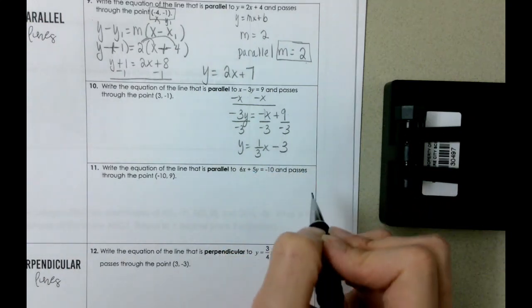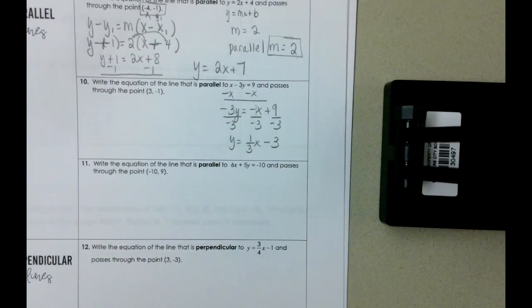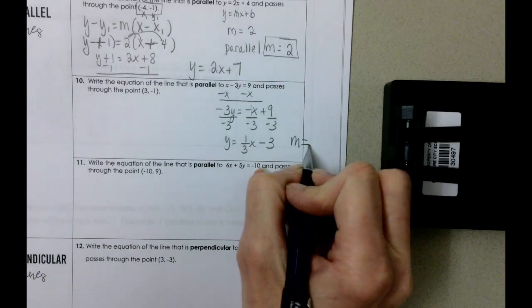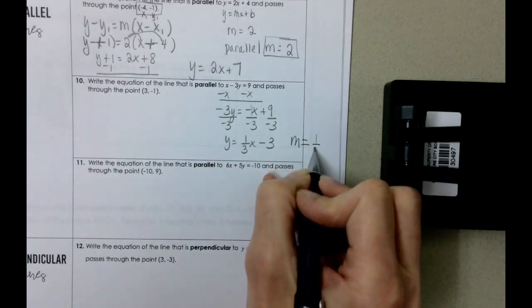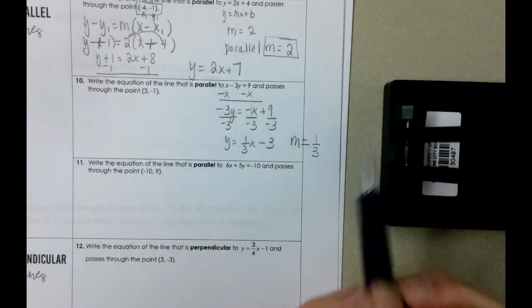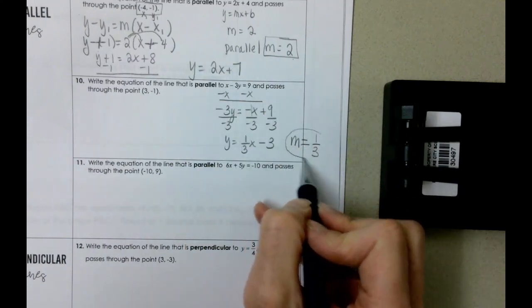What's most important here, once we put it in this format, is we need to know that the slope of this line is one third. And the nice thing is because we're dealing with parallel, we need to use this slope.